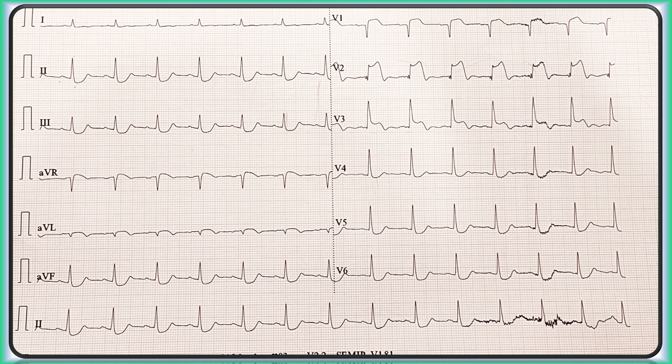ST depression can also be present as reciprocal changes, usually in the area electrically opposite to the region of ongoing ischemia. Leads overlying the ischemic zone show ST elevation, while leads over the electrically opposite area show ST depression as reciprocal changes. In this ECG, ST elevation is present in leads V1, V2, and V3, and the ST depression in inferior and lateral leads are reciprocal changes.